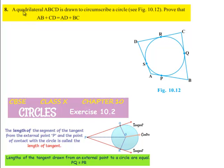Moving on to the eighth question: a quadrilateral ABCD is drawn to circumscribe a circle. Prove that AB plus CD is equal to AD plus BC.